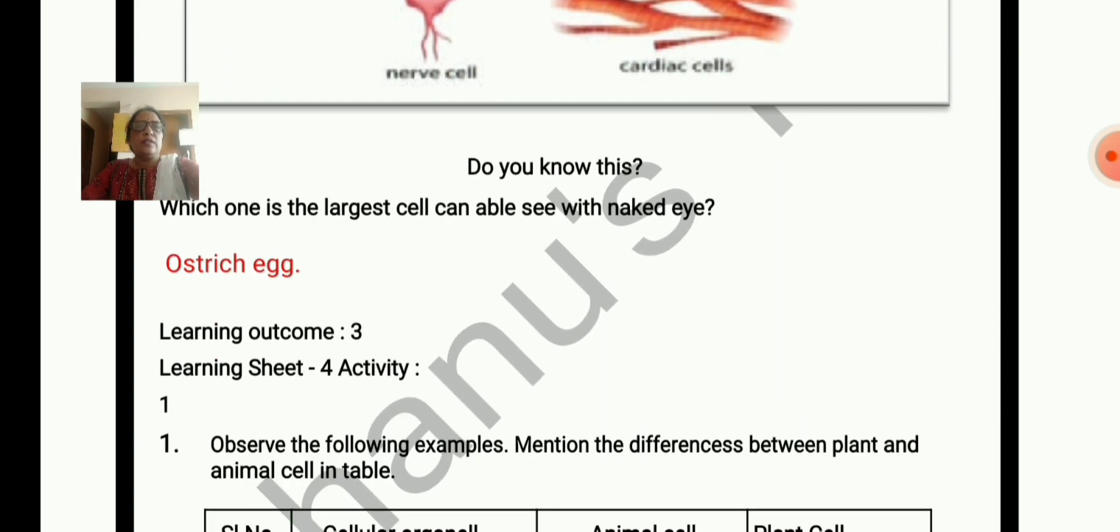Do you know this? Which one is the largest cell that can be seen with naked eye? Without microscope, can you see the cell? Yes, it is an ostrich egg.